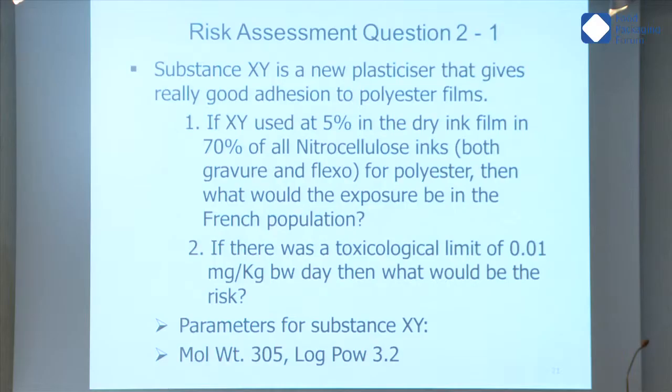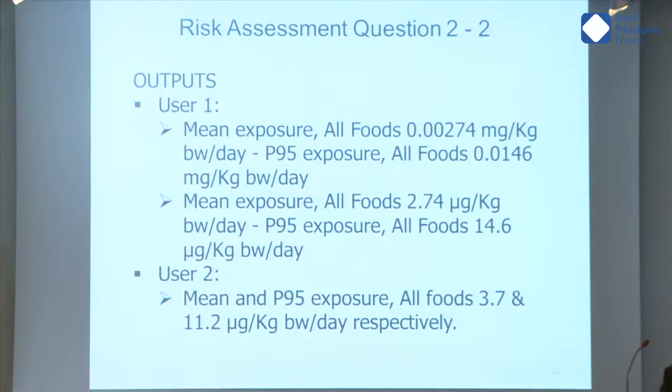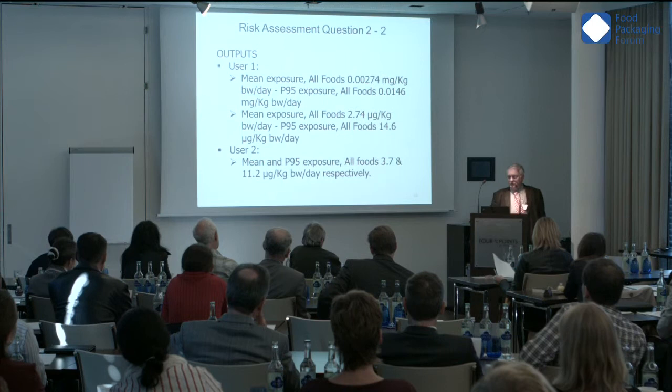Let's look at another question. We've already said that a new substance and NIAS — the approaches are very similar. Let's take a new substance: I'm developing a new product, a new plasticizer that gives really good adhesion in polyester films. I'm using it at 5% in a dry ink film of 70% of all nitrocellulose inks, both Gravure and Flexo for polyester. What would be the exposure for the French population? In this case I have a toxicological limit of 0.01 milligrams per kilo body weight. We get a mean exposure of 11.2 micrograms per kilo at the 95th percentile and 3.7 for one user, or 14.6 and 2.7 for another — this would be typical variation. If you're very close to that limit, then we would have issues.